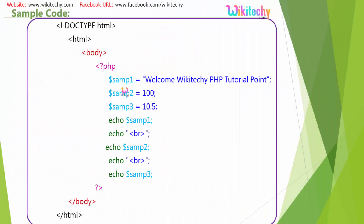You can see $SAMP1 here. When assigned a string value, it becomes a string data type. When assigned 100, it becomes an integer. When assigned 10.5, it becomes a float.